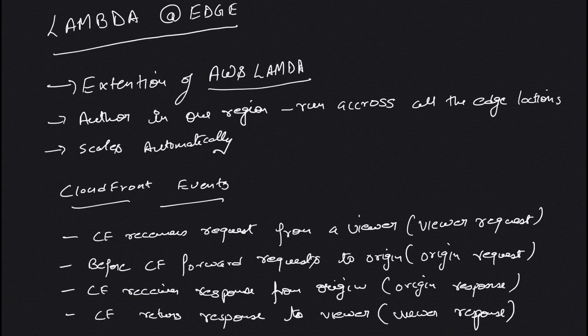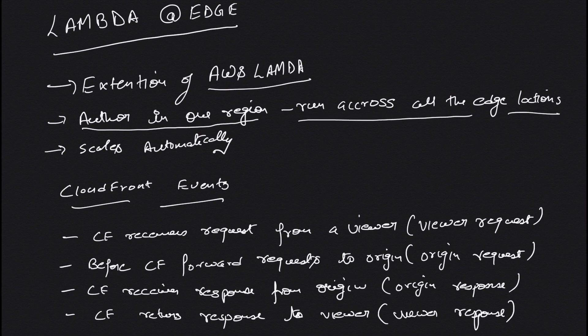Lambda at Edge lets you use AWS Lambda to run your lambda functions across the edge locations in CloudFront. You author your lambda function in one region and it runs across all the edge locations. With regular Lambda it's a regional service — you need to configure it in each region separately. But with CloudFront Lambda at Edge, you configure it in one region and it runs across all CloudFront edge locations worldwide.